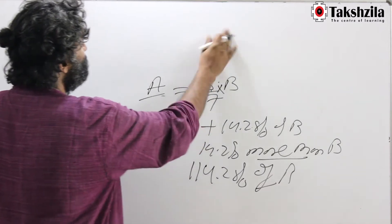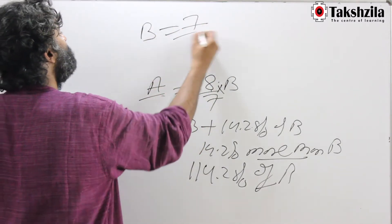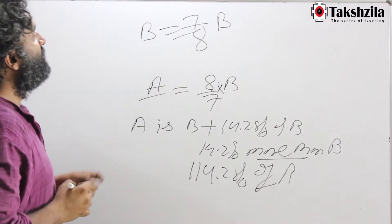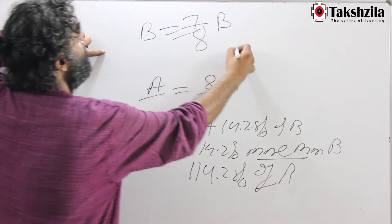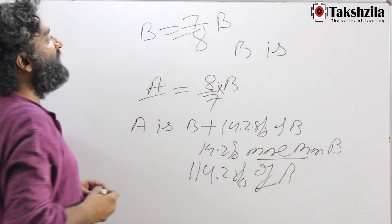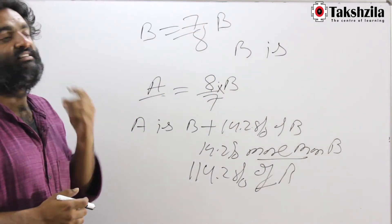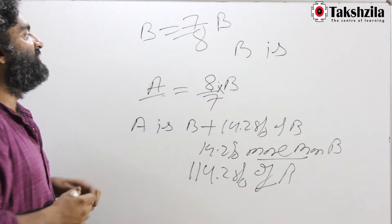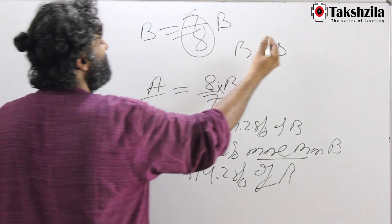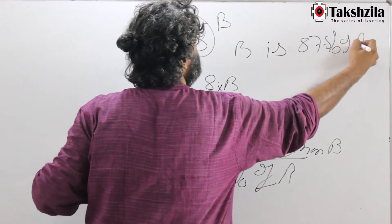I could have also rewritten this as B is equal to 7 by 8 of A. Now, 1 by 8 is 12.5%, so 7 by 8 is 87.5%. So this 7 by 8 in my head straight away becomes 87.5% of A.